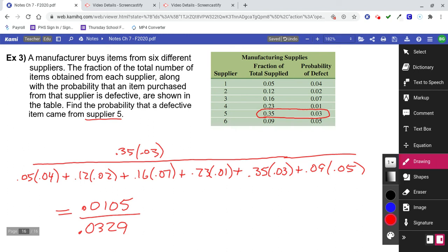So then divide those two numbers, 0.0105 divided by 0.0329, and we get approximately 0.3191.